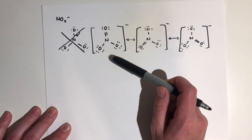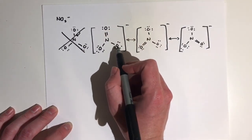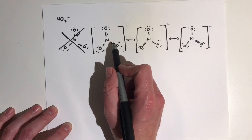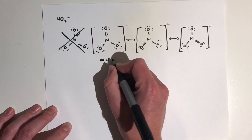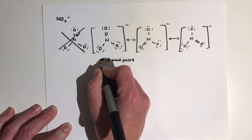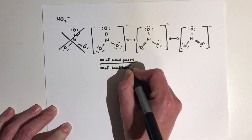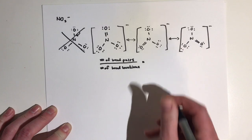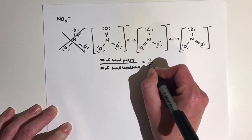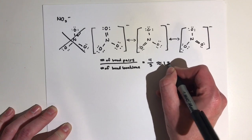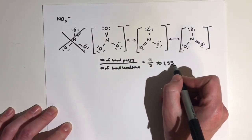The idea behind drawing Lewis structures this way helps us have a clear idea of where the electrons are, and it helps us determine bond order. The way we determine bond order is: number of bond pairs divided by the number of bond locations. In this case, we have four bond pairs in three locations. That's going to be four divided by three, which gives us approximately 1.33. So the bond order for the NO bond in a NO3- molecule is approximately 1.33.